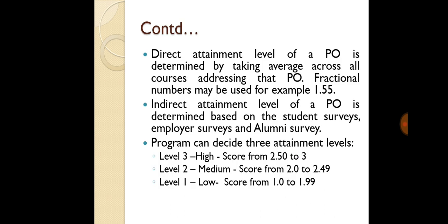In program outcome attainment, there are direct attainment level and indirect attainment level. The direct attainment level is obtained from the CO attainment. The direct attainment level of PO is determined by taking the average across all courses addressing that PO — fractional numbers may be used, for example 1.55. In CO attainment, only one subject was considered, but in PO attainment, as PO is the program outcome of the department, all subjects or all courses in the department are considered and from that the average PO attainment is calculated. The indirect attainment level consists of student survey, employer survey, and alumni survey.